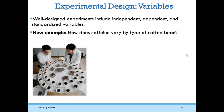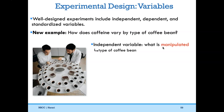Here's a new example: how does caffeine vary by the type of coffee bean? The independent variable — that which is manipulated — would be the type of coffee bean: from South America, Indonesia, or Africa. The dependent variable is what you're measuring — the amount of caffeine. You manipulate the independent variable and measure the dependent variable. Of course you need to standardize other variables. If you're looking at different types of coffee beans and testing for caffeine, you'd have to standardize things like mass — you can't compare a 5-gram African bean to a 3-gram South American bean.